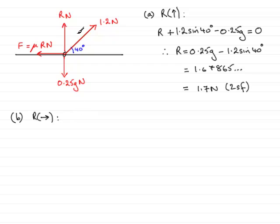If I do that, we go round all the forces in turn, starting with the 1.2 newtons. This is inclined at an angle to the horizontal direction. So the component of the 1.2 newtons acting to the right is going to be 1.2 cos 40°.